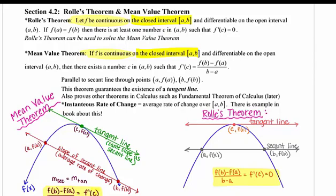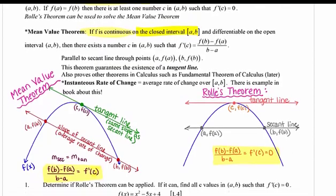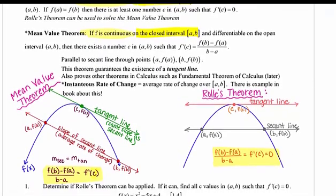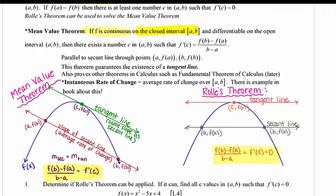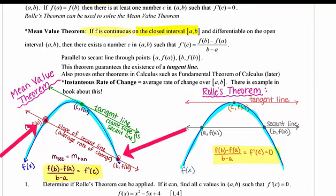Let me show you in a picture how these two theorems are linked, and then I'll give them their names. So let's say you have some curve — some function. From the beginnings of Calc 1, if I have two points along that curve, I can find the slope of that secant line — the average rate of change.